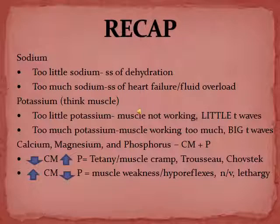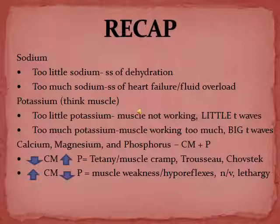Here's a recap: For sodium, too little sodium — think signs and symptoms of fluid overload/heart failure. Too much sodium — think signs and symptoms of dehydration. For potassium, think muscle: too little potassium means the muscle isn't working — weakness and flat T-waves. Too much potassium means the muscle is overworking — twitching and peaked T-waves. For calcium, magnesium, and phosphorus: think CM+P. When calcium and magnesium go down and phosphorus goes up, you get muscle cramps, tetany, Trousseau, and Chvostek signs. When calcium and magnesium go up and phosphorus goes down, you get muscle weakness, hyporeflexia, nausea, vomiting, and lethargy.